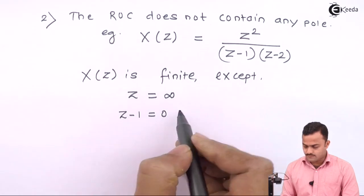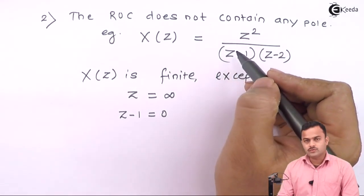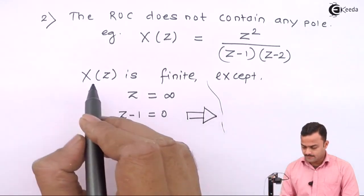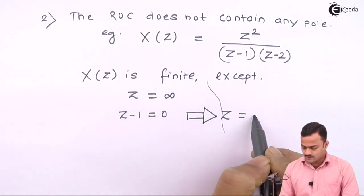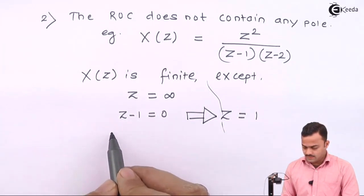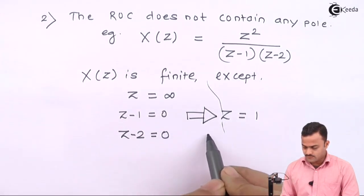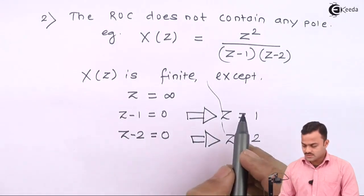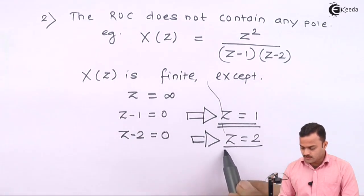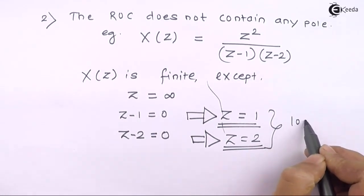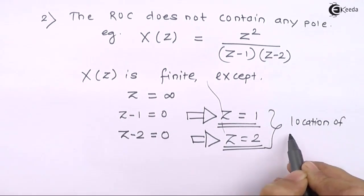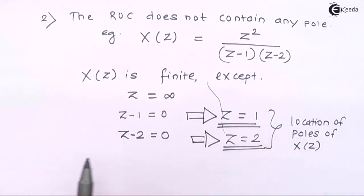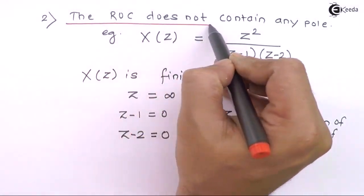Also, if z−1 = 0, that is z = 1, we get zero in the denominator giving an infinite answer. Similarly, z−2 = 0 gives z = 2, making X(z) infinite again. So X(z) is finite except at z = 1 and z = 2, and those are nothing but the locations of the poles of X(z). Hence this example illustrates that the ROC does not contain any poles.